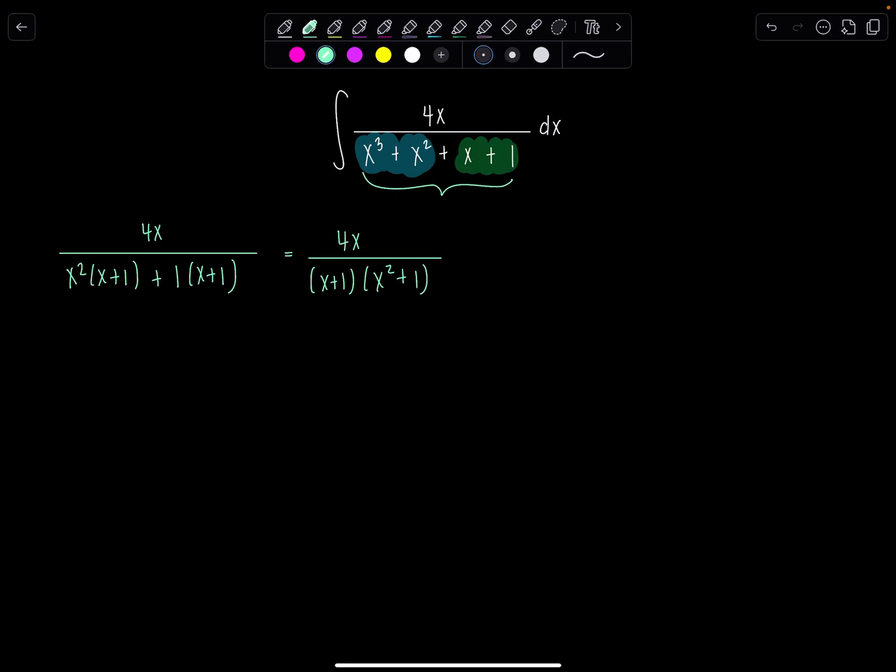And then that tells me my decomposition will have the form a over x plus one, since that's a non-repeated linear factor, plus bx plus c over x squared plus one, since that's an irreducible quadratic.